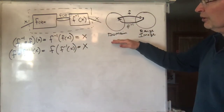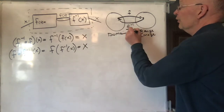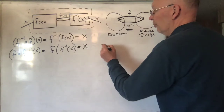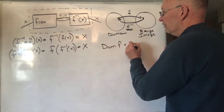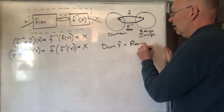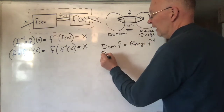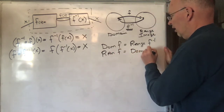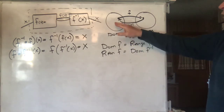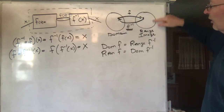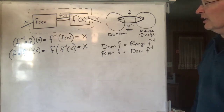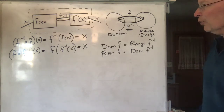F composed with F inverse of X is equal to F of F inverse of X, and they undo each other — you get X back. The domain of F is the range of F inverse, and the range of F is the domain of F inverse. They just take things back and forth.